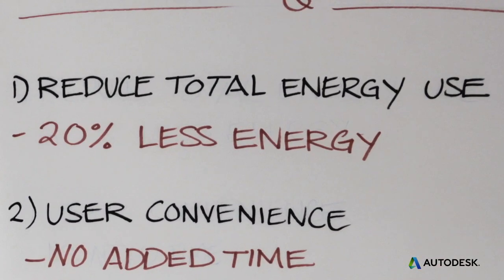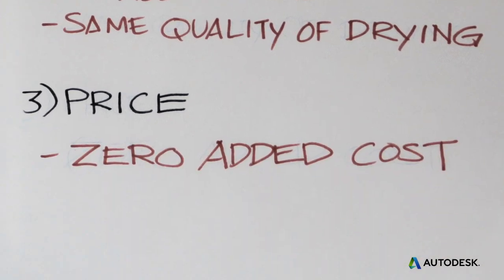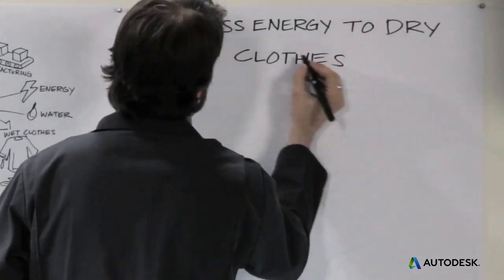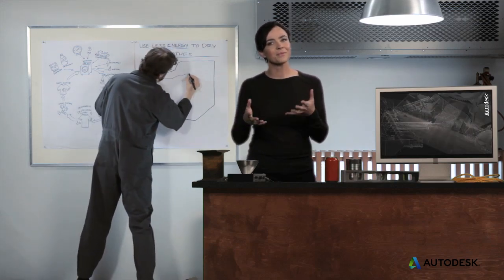That way you can make the case for your environmental goals and fit them in with other project requirements. Okay, using systems and lifecycle thinking, we've narrowed down our challenge from build a more sustainable clothes dryer to use less energy to dry clothes. Now that we've defined the problem, how do we solve it?